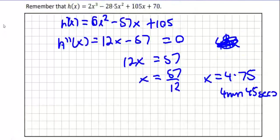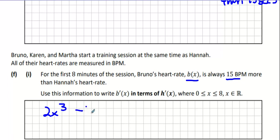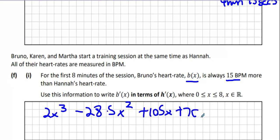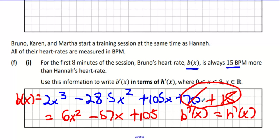We want to get Hannah's original formula, 2x cubed minus 28.5x squared plus 105x plus 70. If I want to make the heart rate 15 more, I just need to add on a 15 at the end. So this is now B of X because it's 15 beats per minute more than Hannah's own. Now if I differentiate this once, it actually turns out to be the same thing because we differentiate the 70 and the 15 in terms of zero. So actually B dash X actually equals H dash X. Both first derivatives are the same because the last number has no influence on the derivative. So that's that part done.